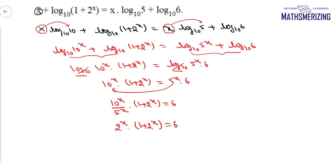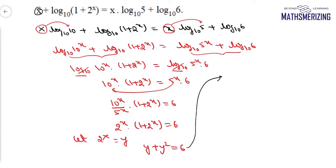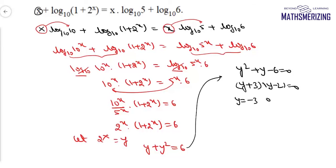Now it's a quadratic equation in 2 to the power x. So I will let y equal 2 to the power x, so I can write y plus y squared equals 6, which is y squared plus y minus 6 equals 0. This factors as (y + 3)(y - 2) equals 0. So the value of y is minus 3 or the value of y is 2.